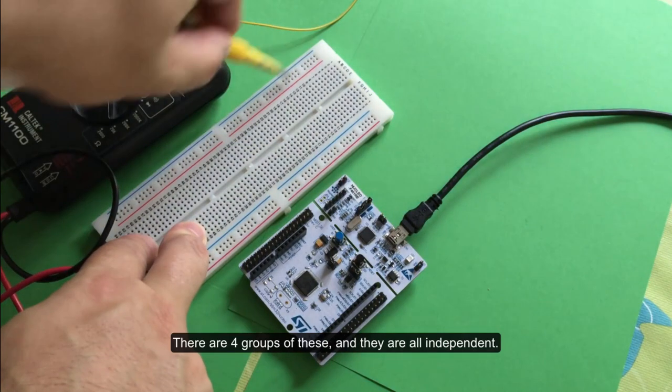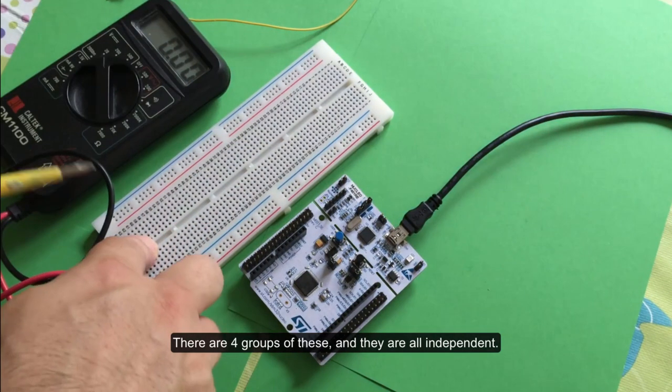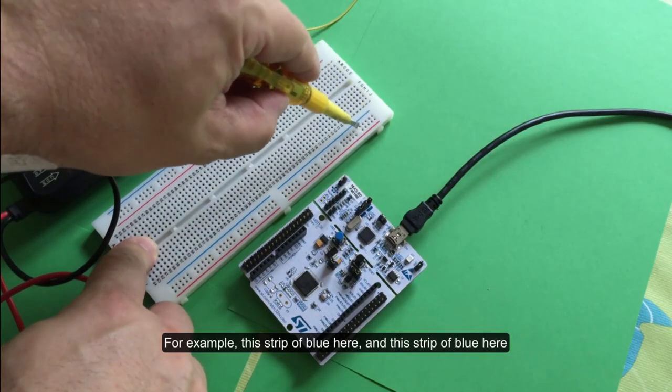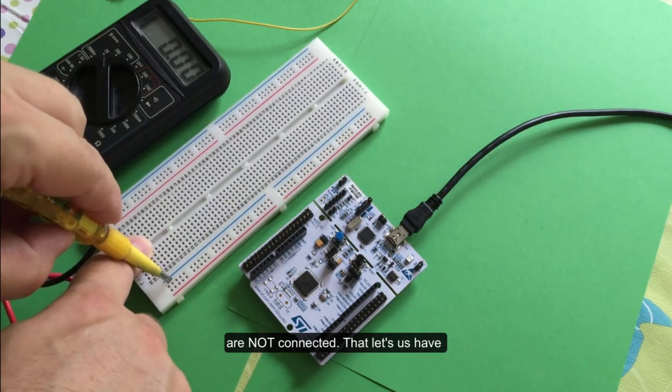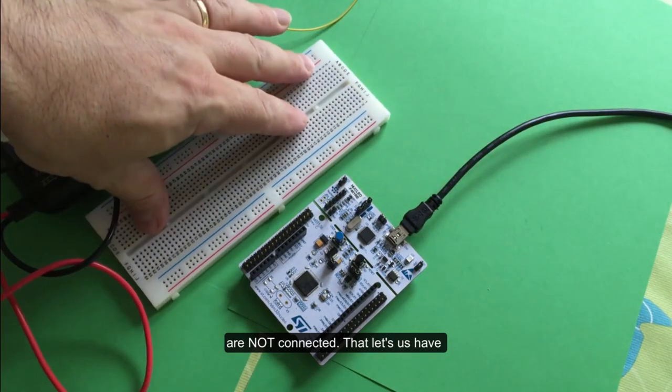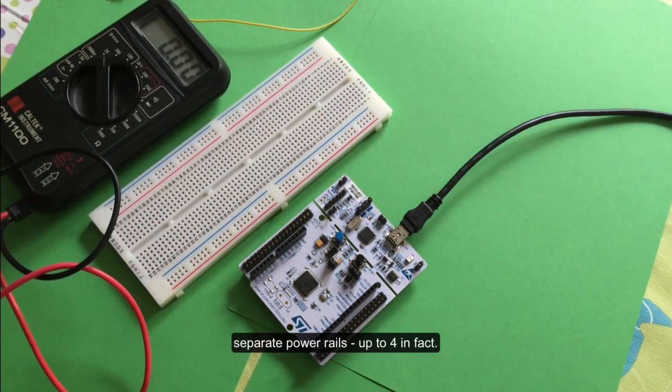There are four groups of these and they are all independent. For example, this strip of blue here and this strip of blue here are not connected. That lets us have separate power supplies, up to four different power supplies in fact. We're only going to be using one.